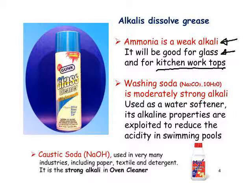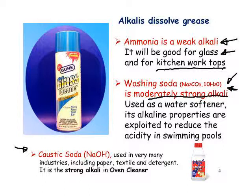While we're looking at the use of alkalis to dissolve grease, let's look at two others you may come across at home: washing soda and caustic soda. Washing soda is hydrated sodium carbonate, bought in the supermarket as crystals. It's a moderately strong alkali with a pH of around 11. It's used as a water softener, where it precipitates the ions causing hardness — calcium and magnesium — as insoluble carbonates, so the water is no longer hard.